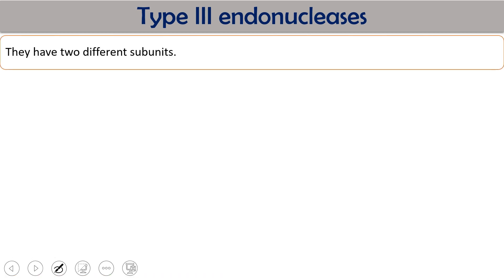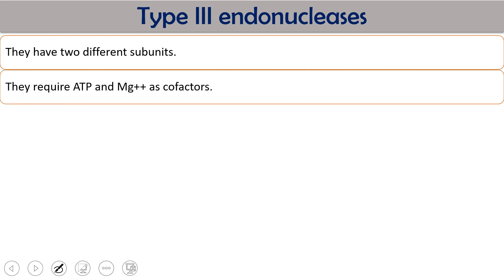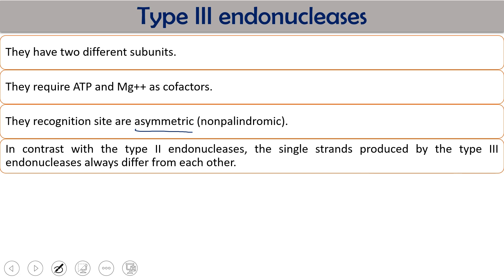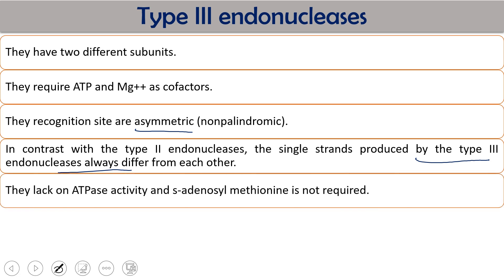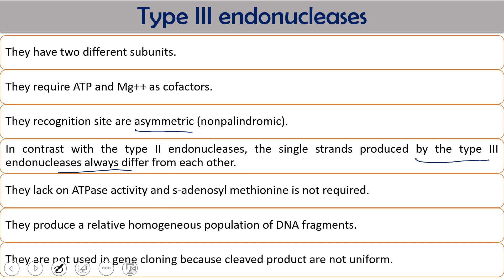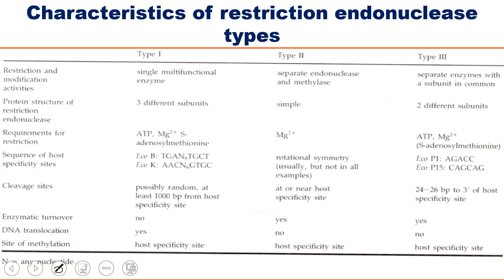Type III enzymes have two different subunits and require ATP and magnesium. Type I requires ATP, magnesium, and S-adenosyl methionine; Type II requires only magnesium; Type III requires ATP and magnesium. Type III enzymes recognize asymmetric, non-palindromic sequences. In contrast to Type II, the single strands produced by Type III endonucleases always differ from each other. They lack ATPase activity and S-adenosyl methionine is not required. They produce a relatively homogeneous population of DNA but are not used for gene cloning because cleavage products are not uniform.